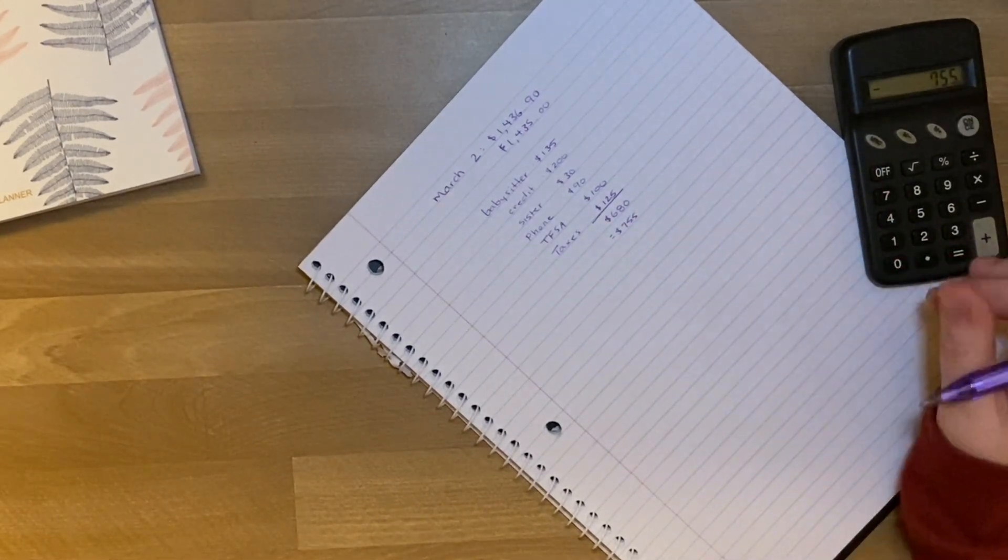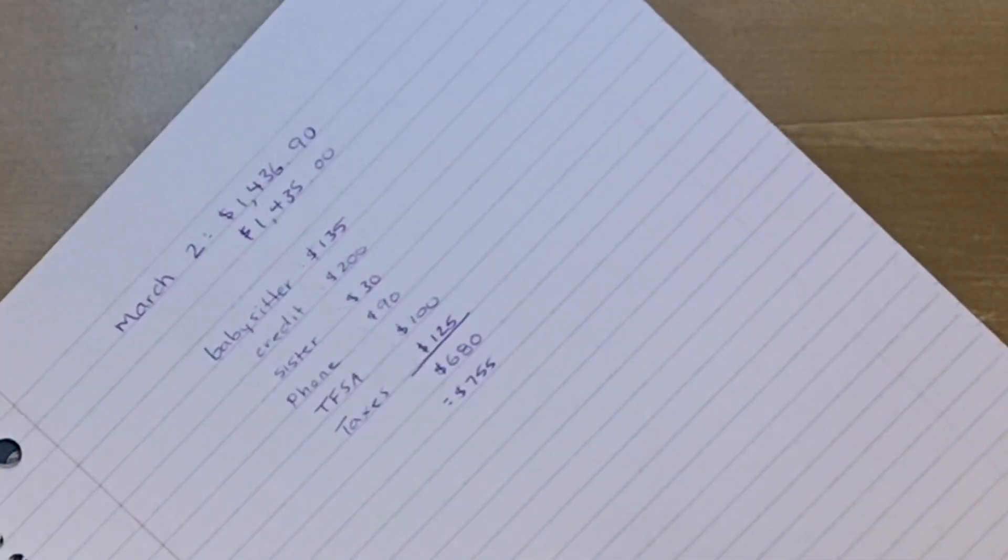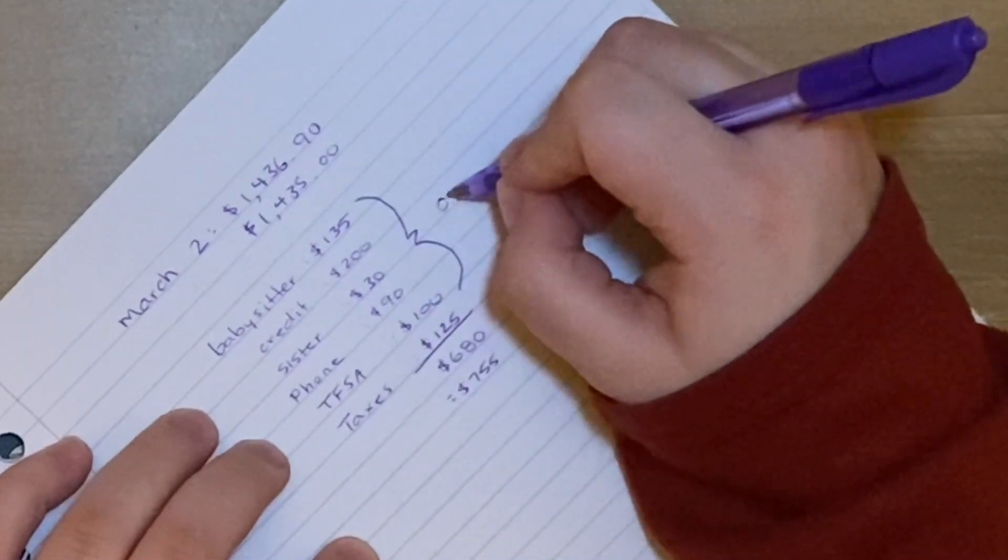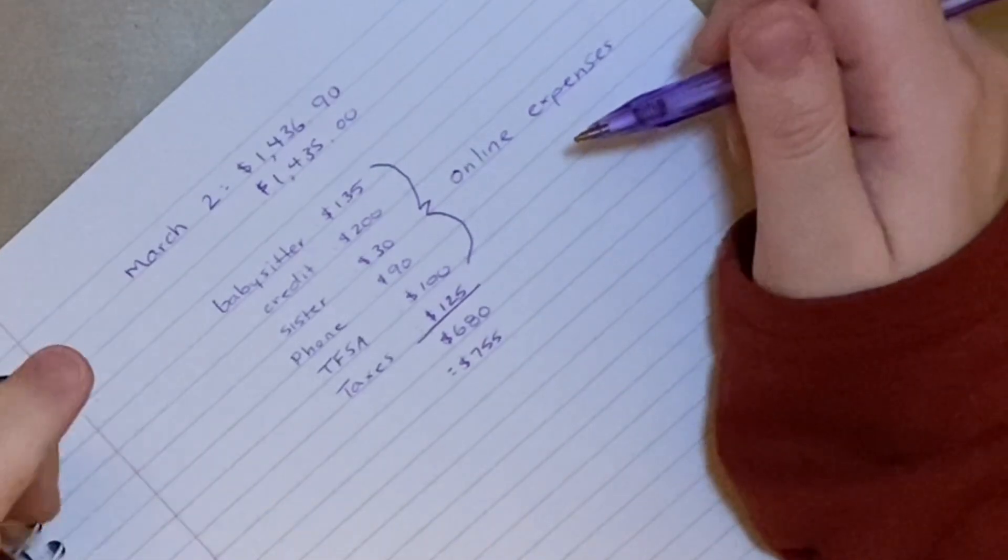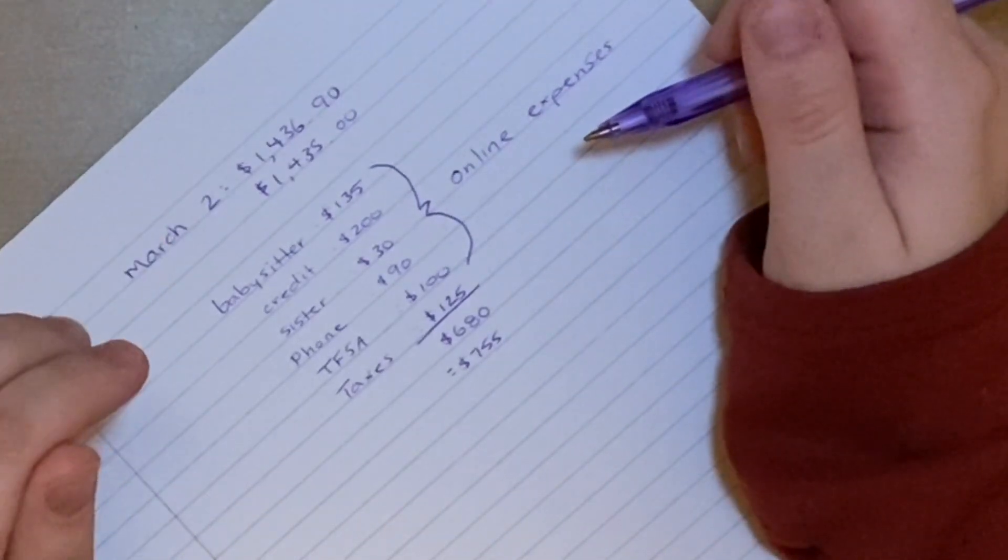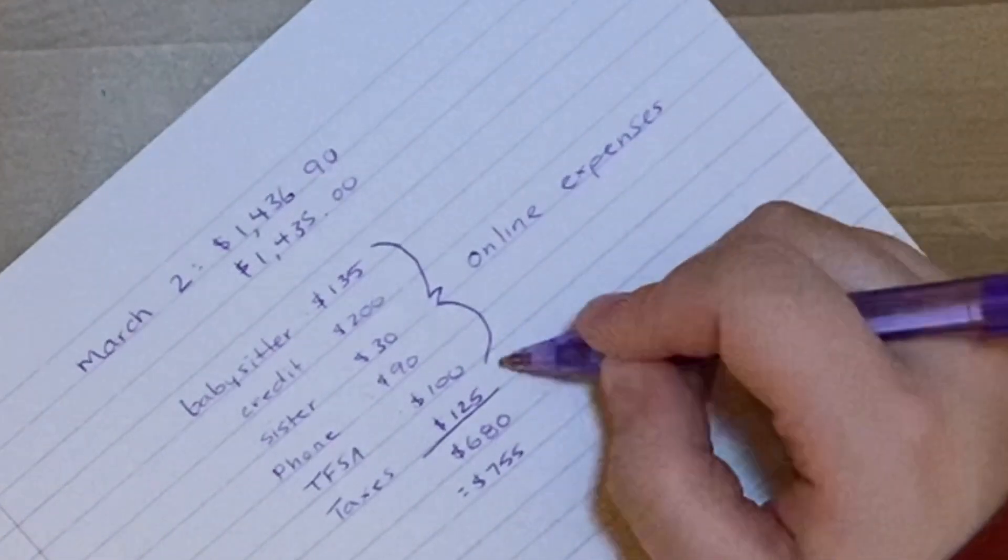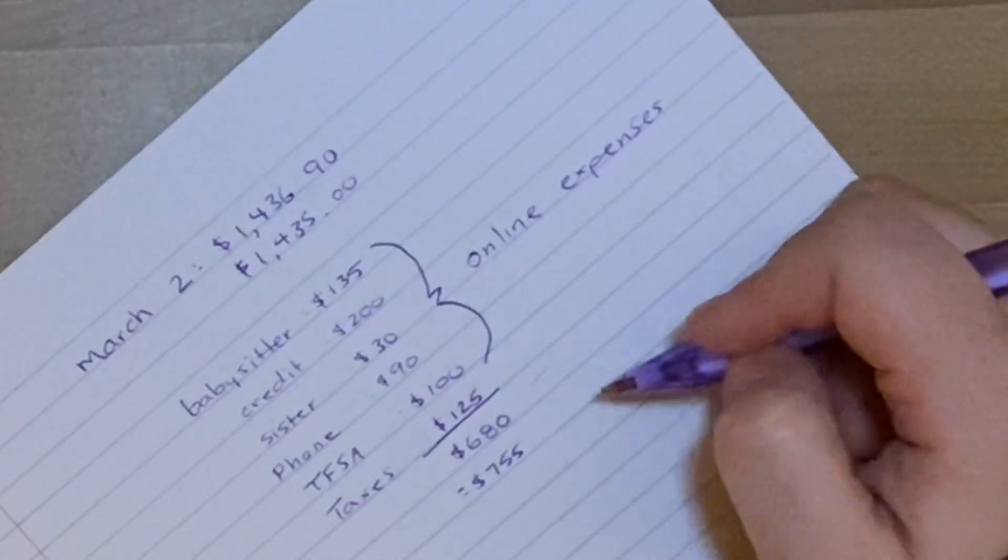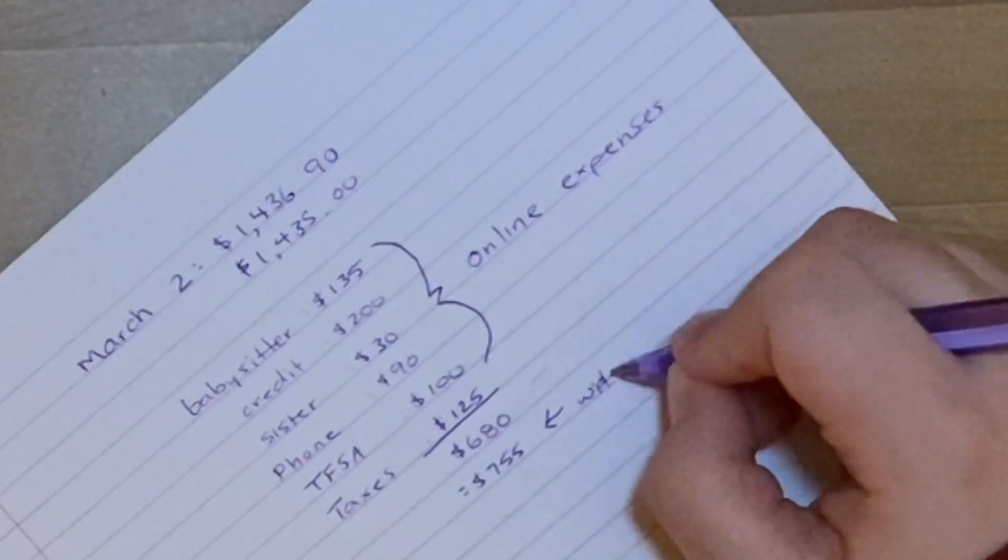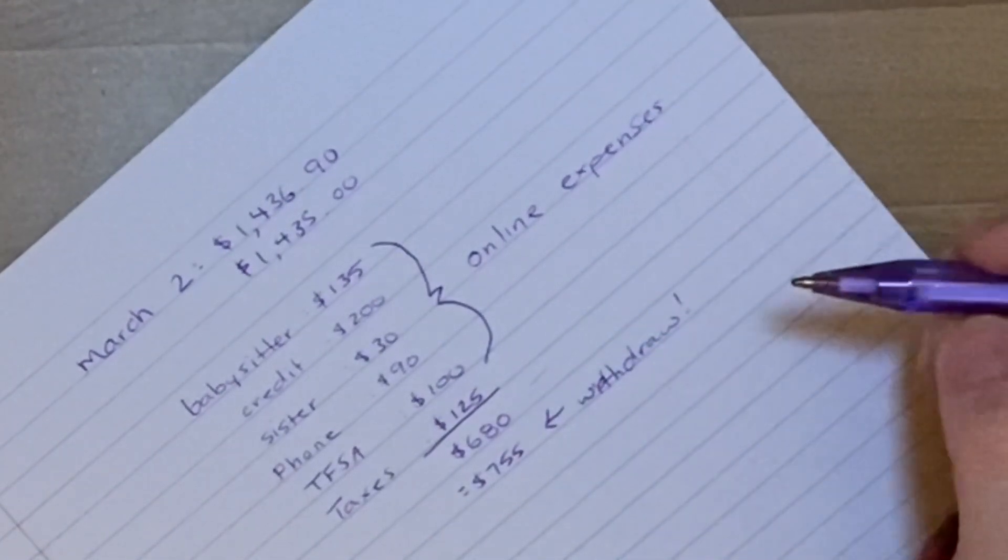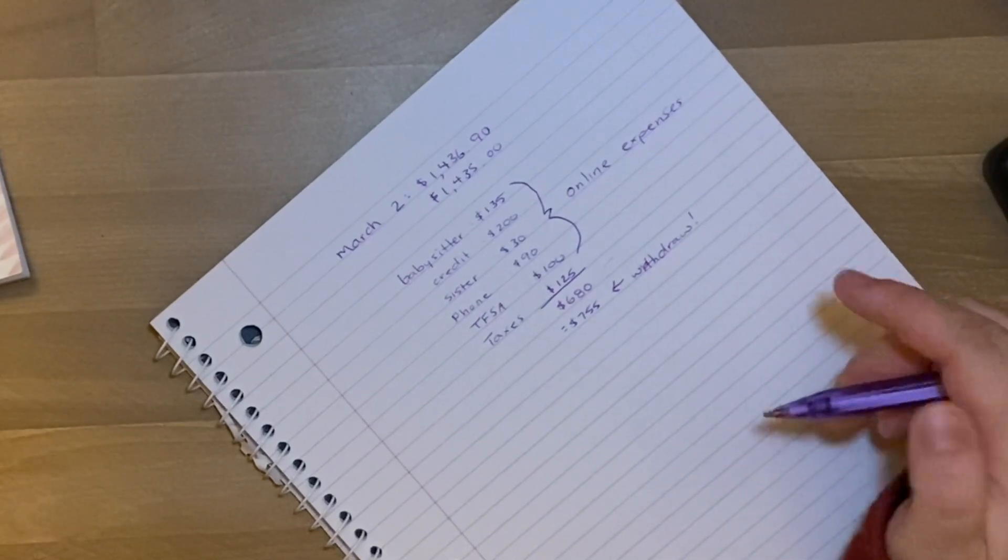I just wanted to break this down. So these here are all of my online expenses. Okay. So these are anything that will be paid via e-transfer, automatic withdrawal, or if I actually have to physically pay a bill online, that is where this money goes. So $680, I will never see, that's never going to materialize in my hands. Whereas this money here is how much I'm going to go to the bank tomorrow and ask them to withdraw. That is $755.